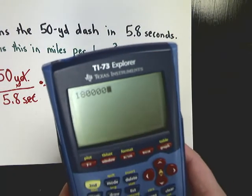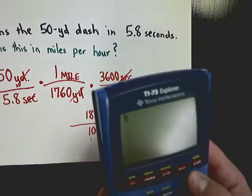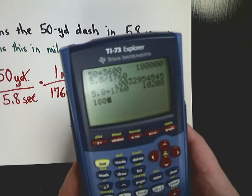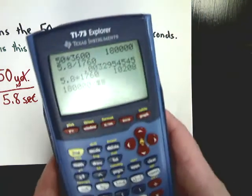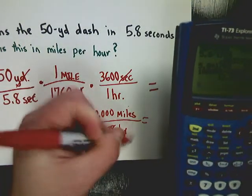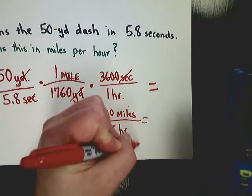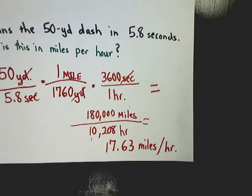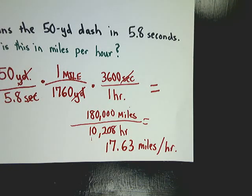180,000 divided by 10,208. And I get 17.63 miles per hour. So, that's it. That's rates, ratios, and conversions. So, I hope you found something helpful here. And if you didn't, I apologize.